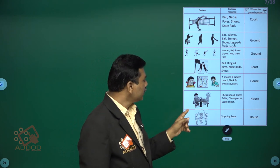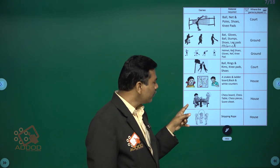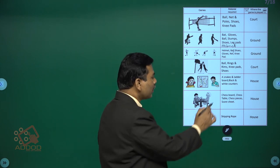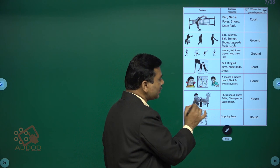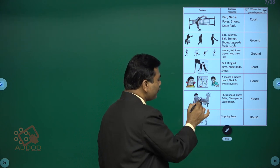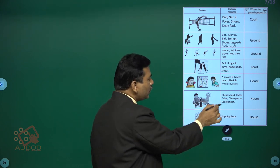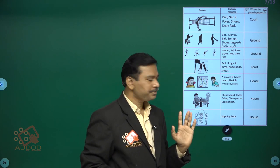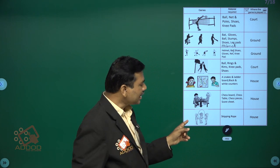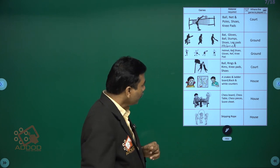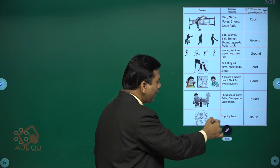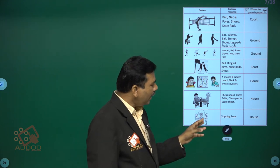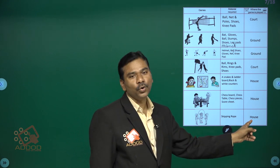For chess, the material required includes: a chess board, chess table, chess pieces, and a score sheet. This game is played at home. For skipping, the main material required is a skipping rope. This kind of game can also be played at home.